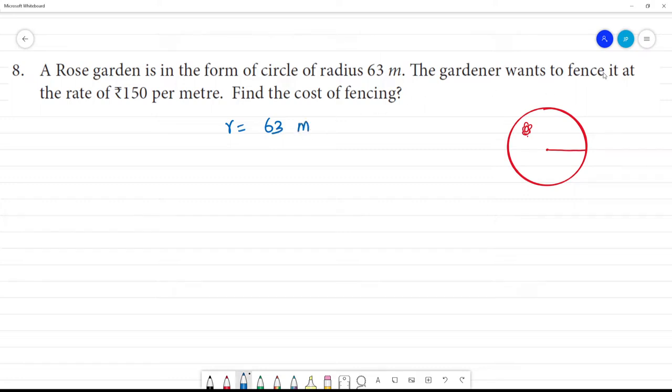The gardener wants to fence it. What do we have to fence? The rate is 150 rupees per meter - per meter means for 1 meter, 150 rupees charge. Find the cost of fencing.